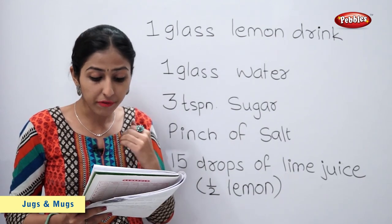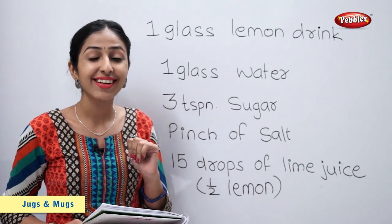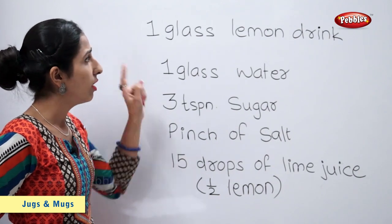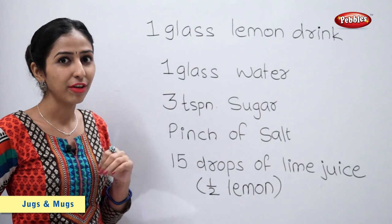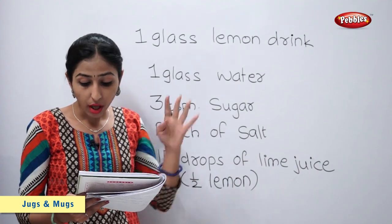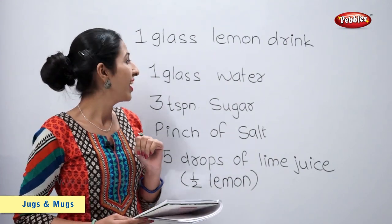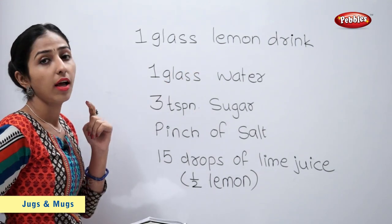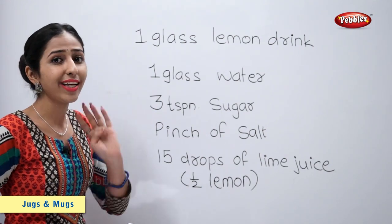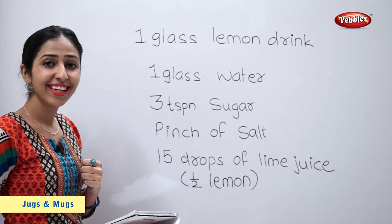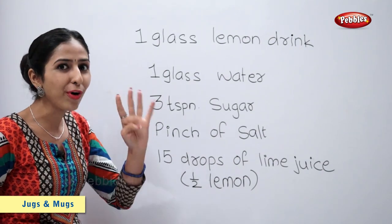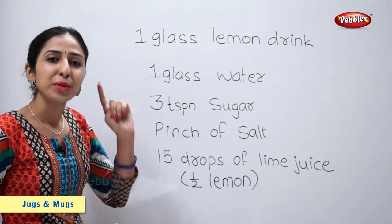How much salt will we need for 4 glasses of juice? A pinch of salt for 1 glass, so 4 pinches of salt for 4 glasses. How much sugar will we need for 4 glasses of juice? For making 1 glass of lemon drink, I used 3 teaspoons of sugar. So, 4 glasses will require 12 teaspoons of sugar.